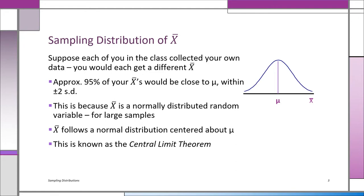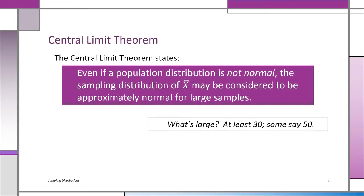This reasoning is called the central limit theorem, and everything we do in statistical inference relies on this theorem. Here's what the central limit theorem says: even if a population distribution is not normal, the sampling distribution of the x-bars is normal, or at least may be considered approximately normal, for large samples. So even if the population distribution is very far from normal, as long as we're taking x-bar as our random variable and looking at the sampling distribution of x-bar, x-bar will follow a normal distribution.